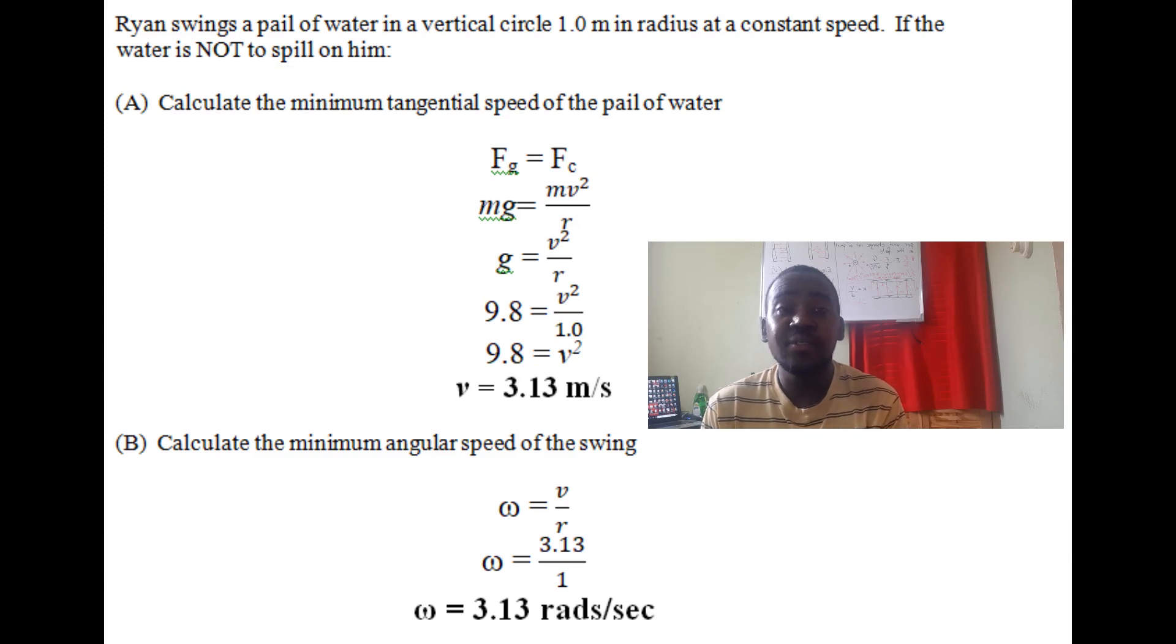Force of gravity is mg, and centripetal force is mv²/r. The masses cancel, so we have g = v²/r. We know g is 9.8, v² is unknown, and r is 1 meter. We find v = √9.8, which gives v = 3.13 m/s.